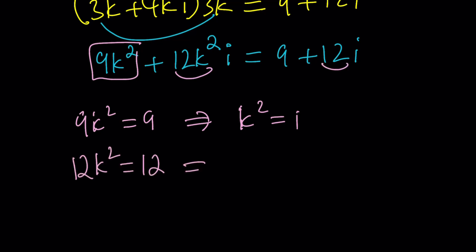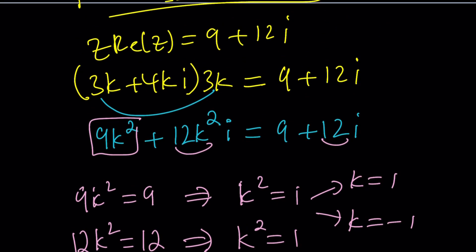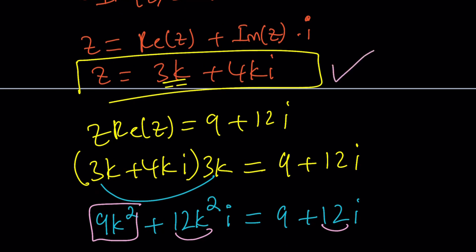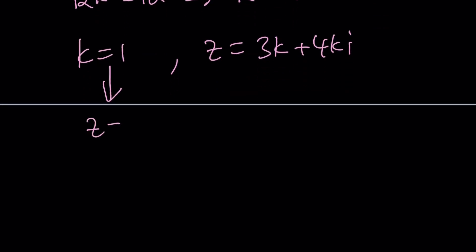This needs to be consistent, by the way. Otherwise there are no solutions. From here we get two results. k is either 1 or negative 1. If k is equal to 1, now you got to remember, Z was written as 3k plus 4ki. So if k is equal to 1, then Z becomes 3 plus 4i.